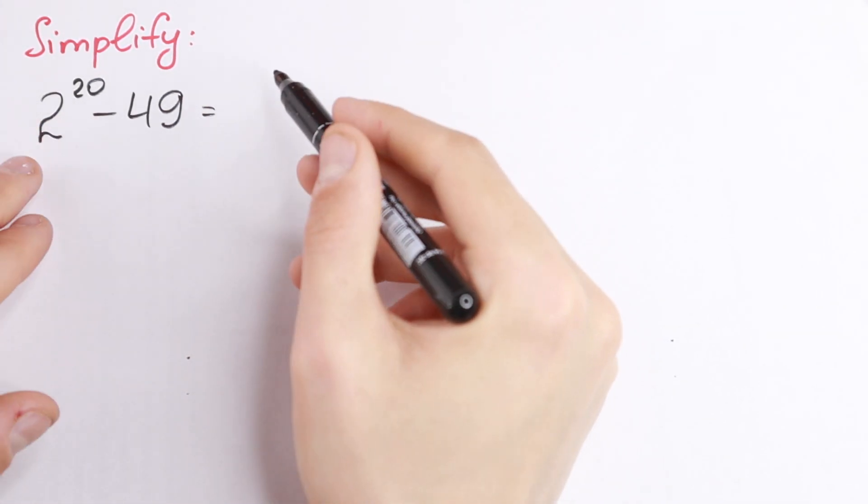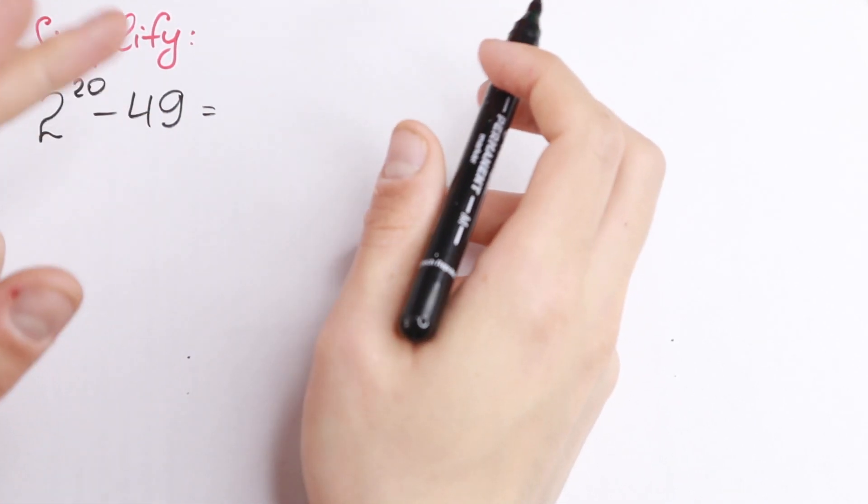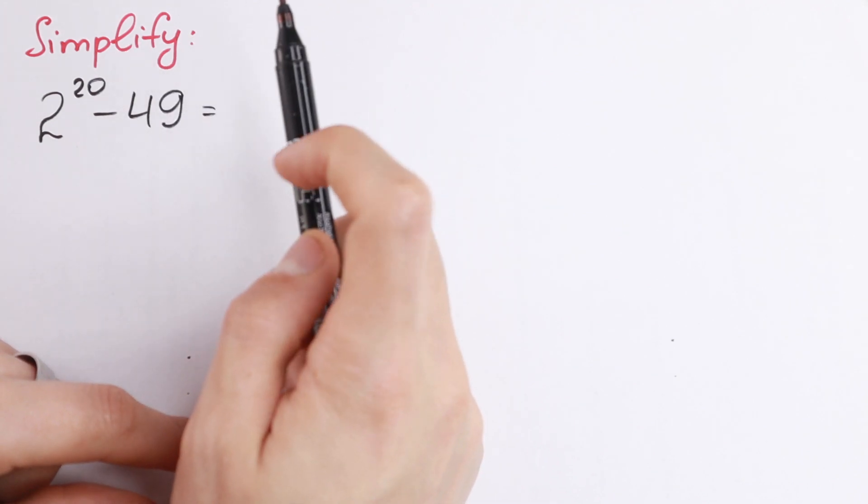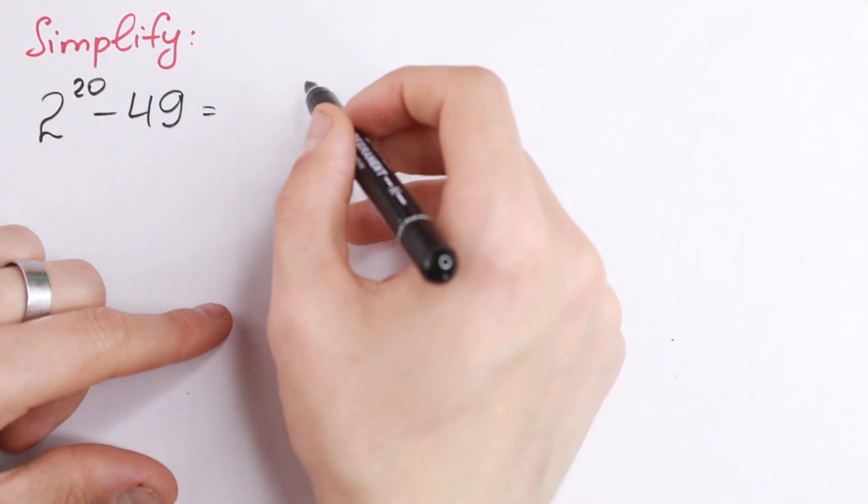We need to simplify this, we need to subtract these two values. 2 to the 20th power minus 49. And on the first sight this equation is really hard, because we need to raise 2 to the 20th power, which is so long. But I'm going to show you a really good trick how to solve it.